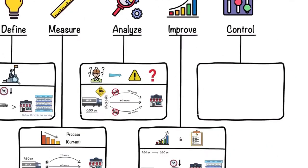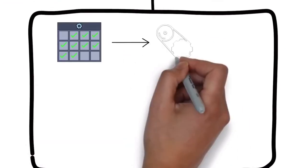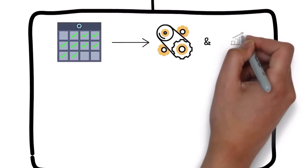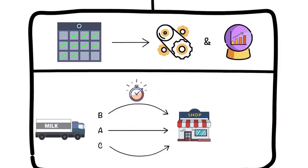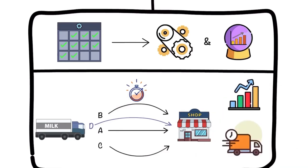And finally, in the Control phase, you make regular adjustments to control new processes and future performance. You continue to monitor the delivery times and try out alternate routes to continually improve the process and ensure even faster delivery.